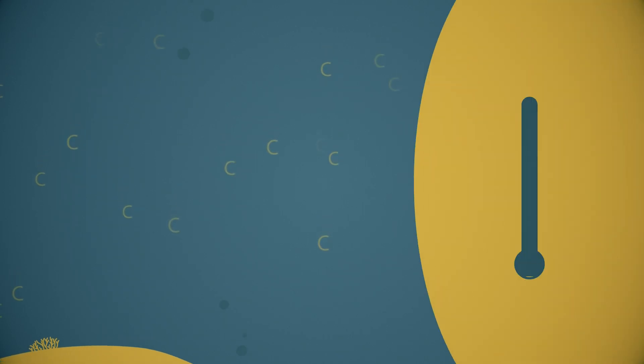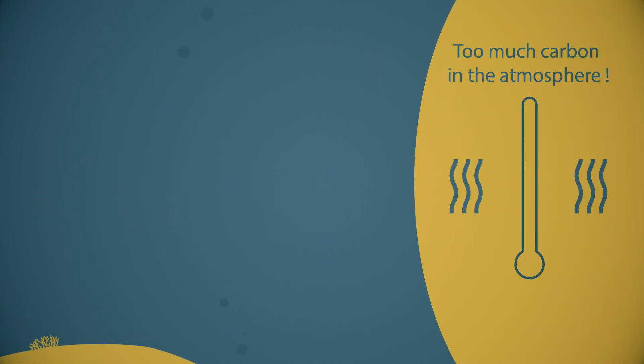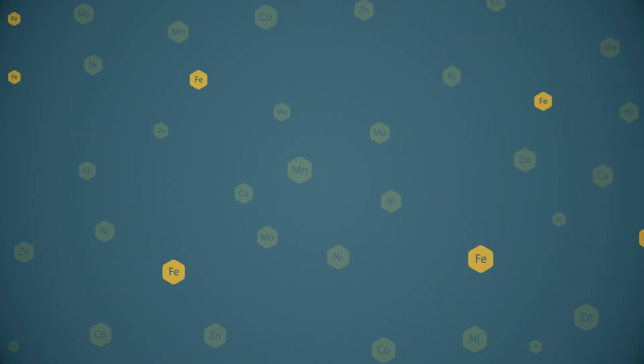When they die, their remains transfer some of this carbon to the deep sea. This means that without the photosynthesis, much more carbon would be in the atmosphere and the Earth would be warmer.